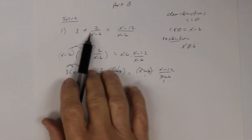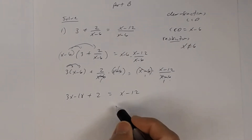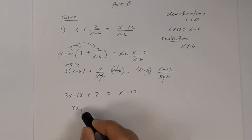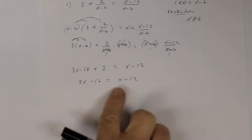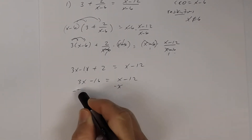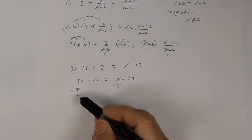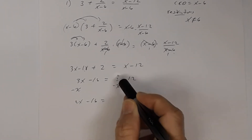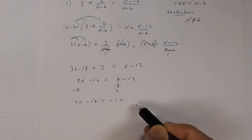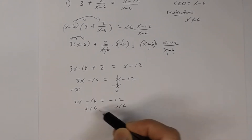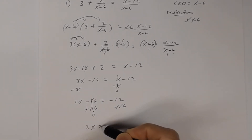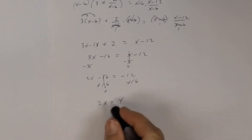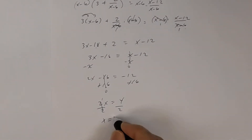Notice I went from a rational equation to a linear equation. Let's combine terms on the left: 3x, and negative 18 plus 2 is negative 16. Now subtract x from both sides to bring all variables to one side and constants to the other. 3x minus x is 2x minus 16 equals negative 12. Adding 16 to both sides, I get 2x equals 4. Dividing both sides by 2, I get x equals 2.